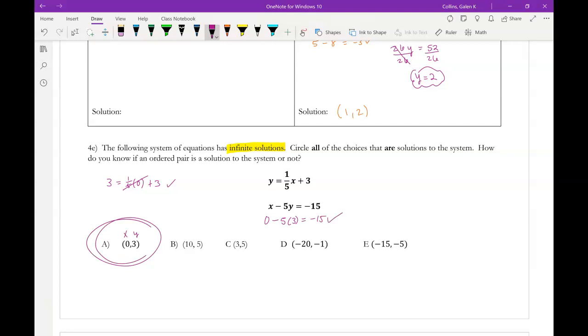Let's look at B. Choice B is x is 5, y is 10. Nope, I said that backwards. X is 10, y is 5. So you could again use either form of the equation. I'm going to use standard form. So 10 minus 5 times 5 should be negative 15. That is, if it's a solution, that is. So 10 minus 25 is, in fact, negative 15. All right, so B is also a solution.